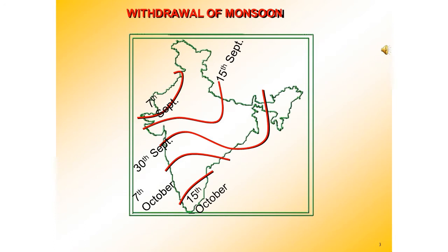These cyclonic depressions originate over the Andaman Sea. These cyclones generally cross the eastern coast of India and cause heavy and widespread rain. These tropical cyclones are very destructive. The thickly populated deltas of Godavari, Krishna and Kaveri are frequently struck by such cyclones, causing lots of damage to life and property.